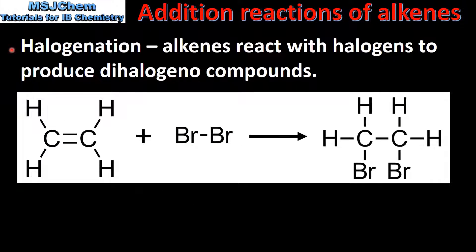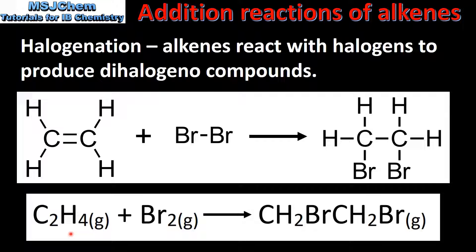The next type of reaction is halogenation. In halogenation, alkenes react with halogens to produce dihalogeno compounds. Here we have ethene reacting with bromine to produce 1,2-dibromoethane. And here we have the chemical equation for the reaction.